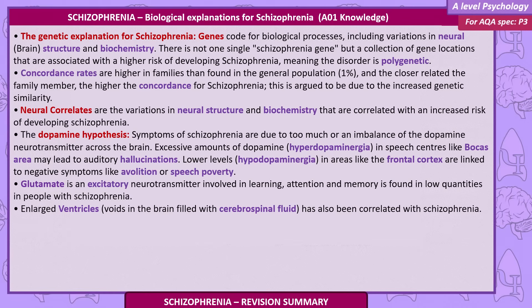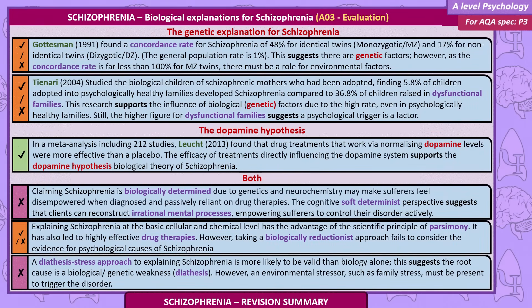Glutamate is an excitatory neurotransmitter involved in learning, attention and memory, and it is found in low quantities in people with schizophrenia. Enlarged ventricles — voids in the brain filled with cerebrospinal fluid — have been correlated with schizophrenia. Gottesman, 1991, found a concordance rate of 48% for identical twins (monozygotic, MZ) and 17% for non-identical twins (dizygotic, DZ). The general population rate is 1%, suggesting genetic factors, but as concordance is far less than 100% for MZ twins, there must also be a role for environmental factors.